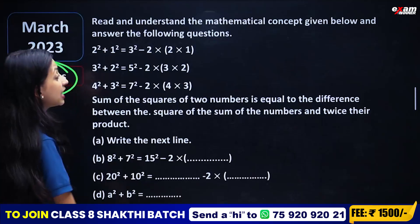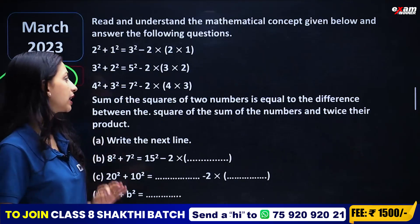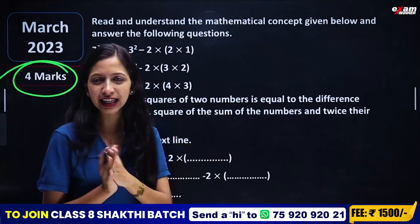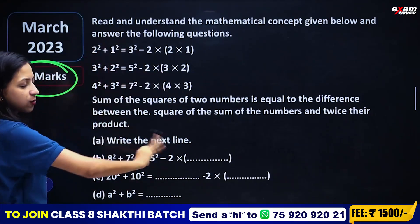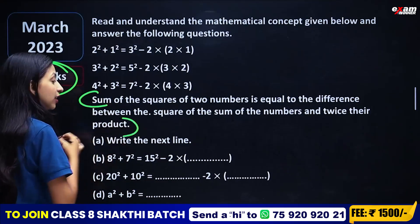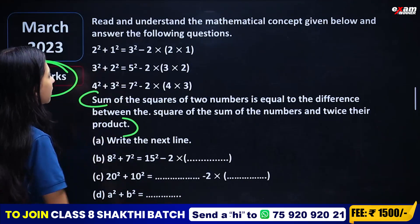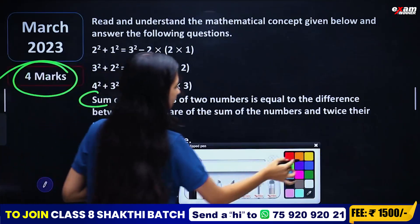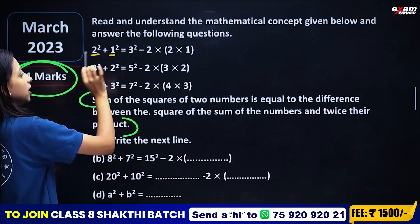Read and understand the mathematical concept given below and answer the following questions. There is a pattern. In this chapter, we will answer the concept. What is the concept here? 2 squared plus 1 squared is equal to 3 squared minus 2 into 2 into 1. Here is 2 into 1, and here is 3 into 2 into 2 into 1.